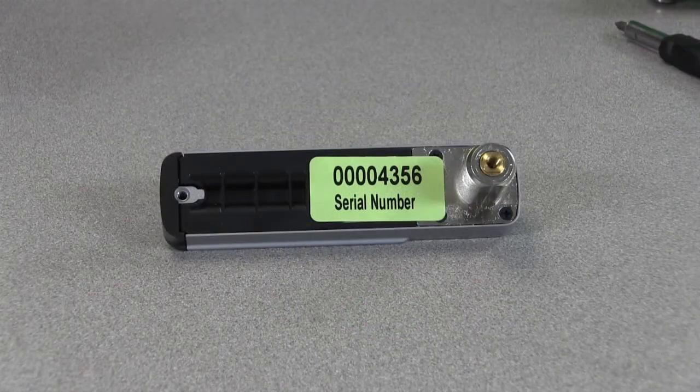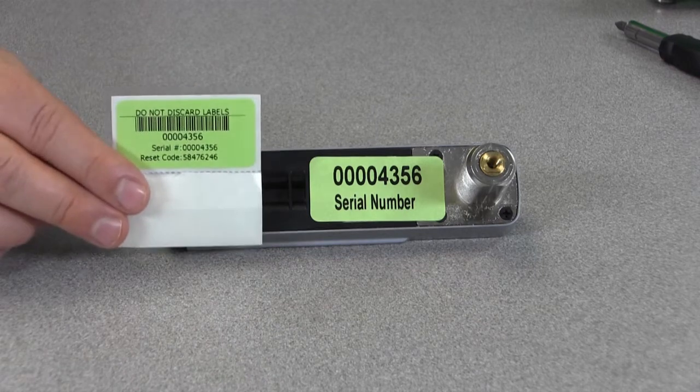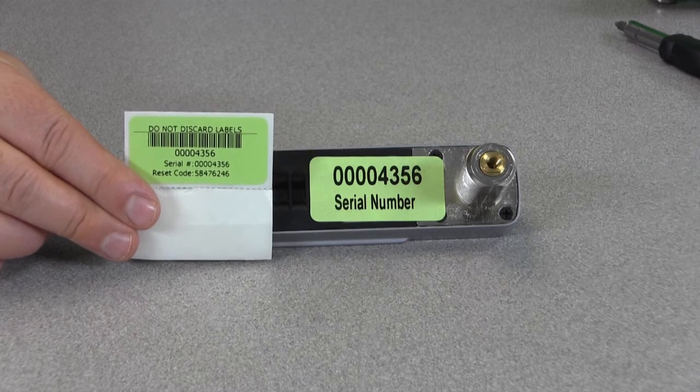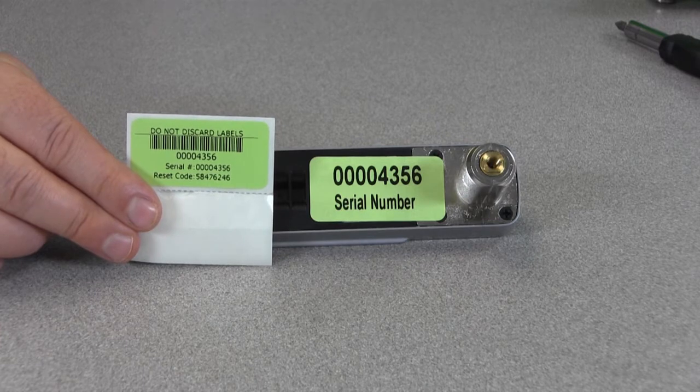Before you begin, please note that the lock comes with two green stickers. One sticker is attached to the back of the lock and the other is loose in the box. Locate the loose sticker and place it in a secure location. The stickers contain vital information for resetting the lock.